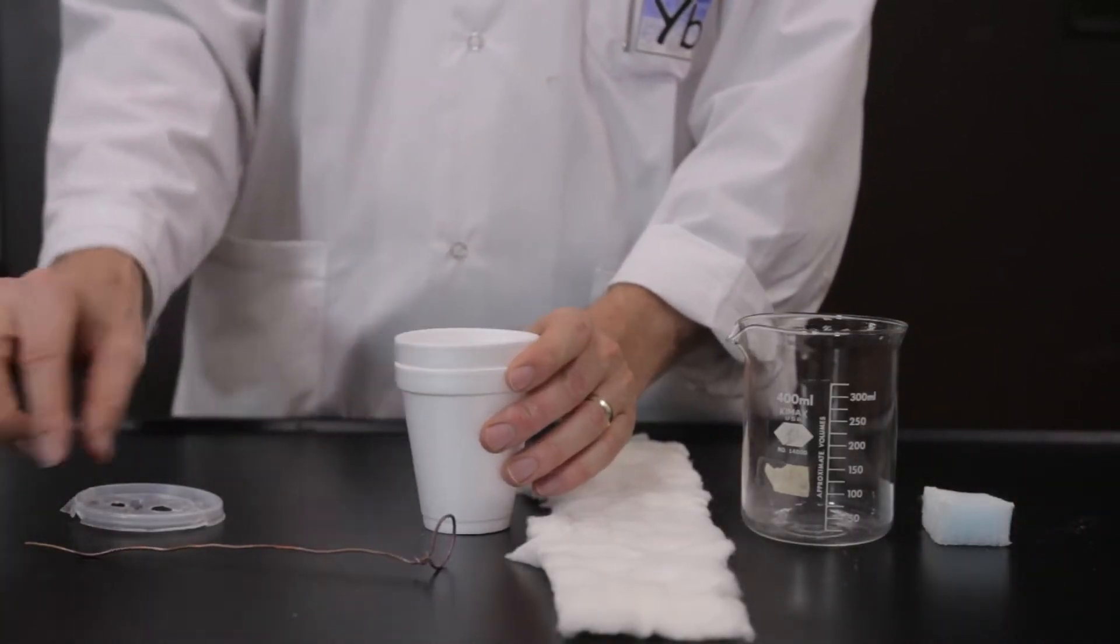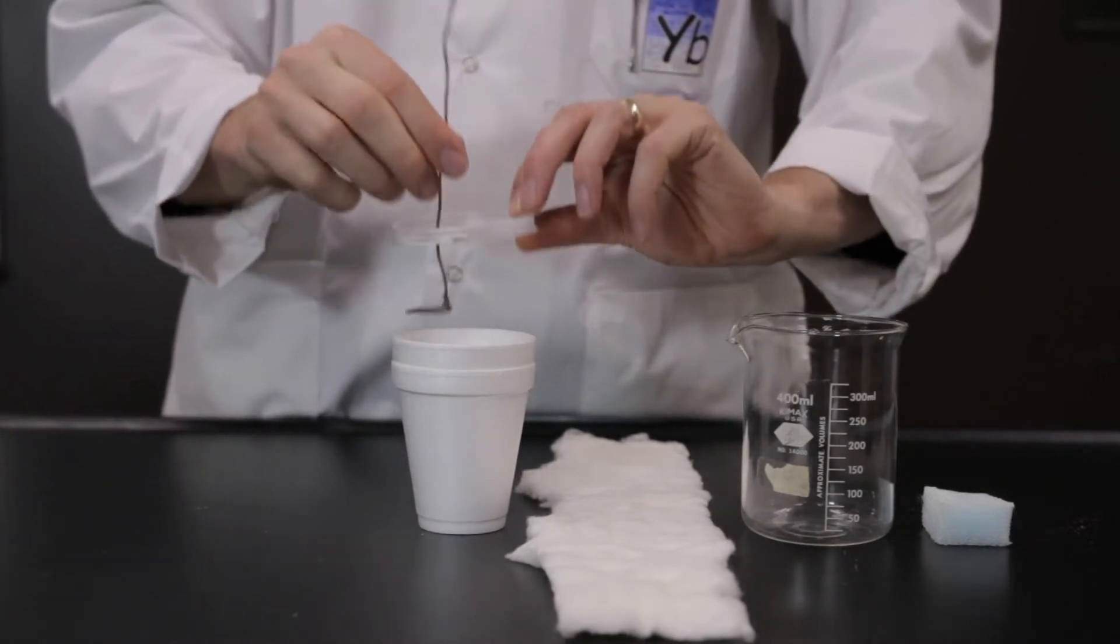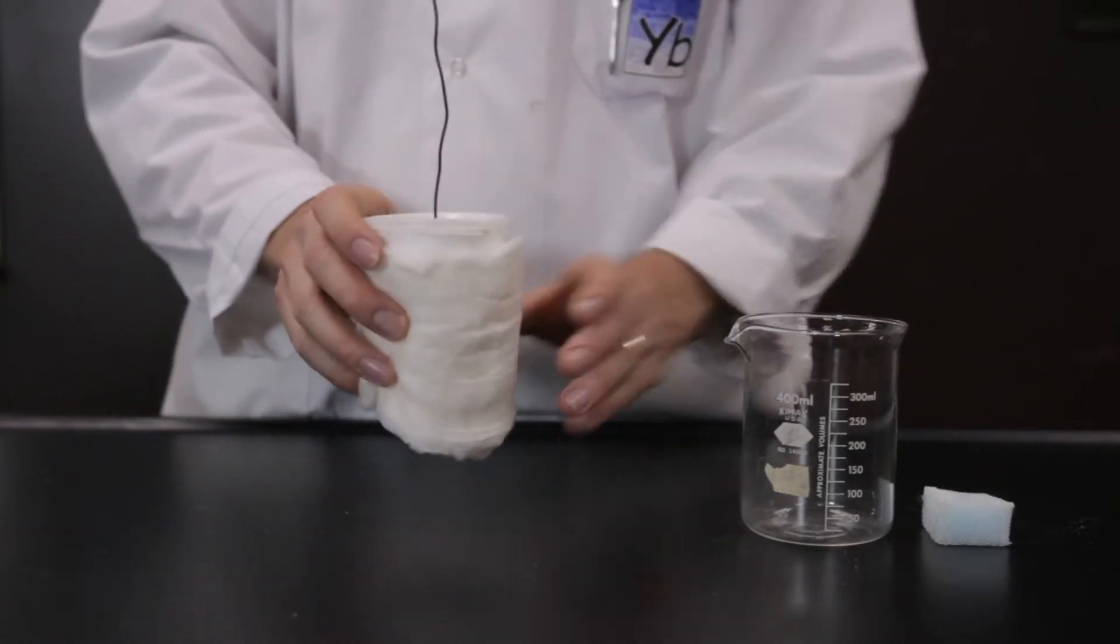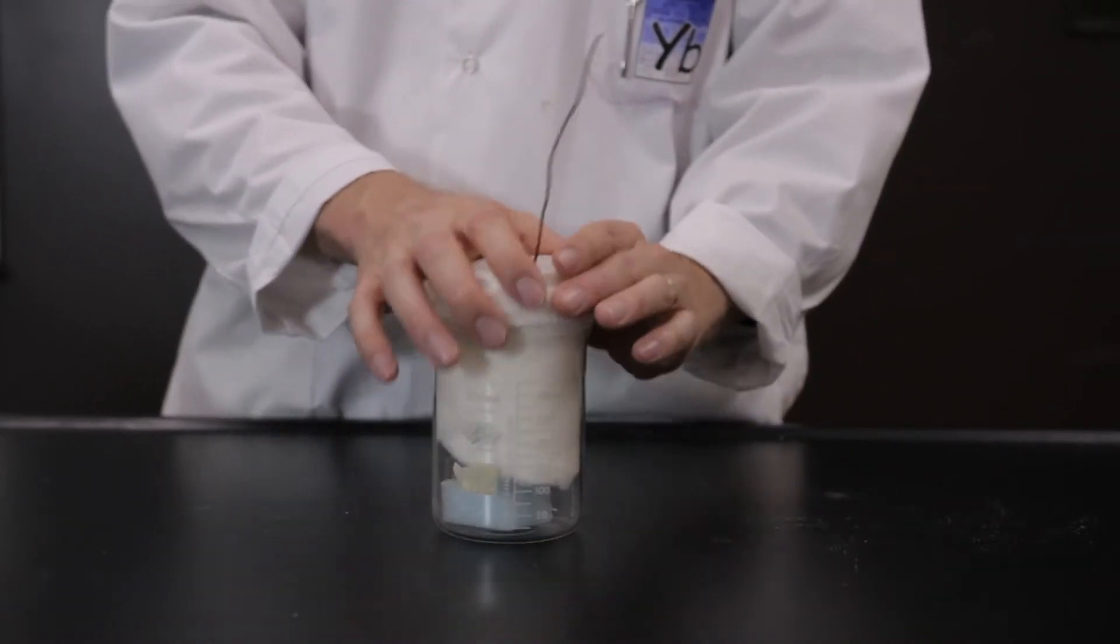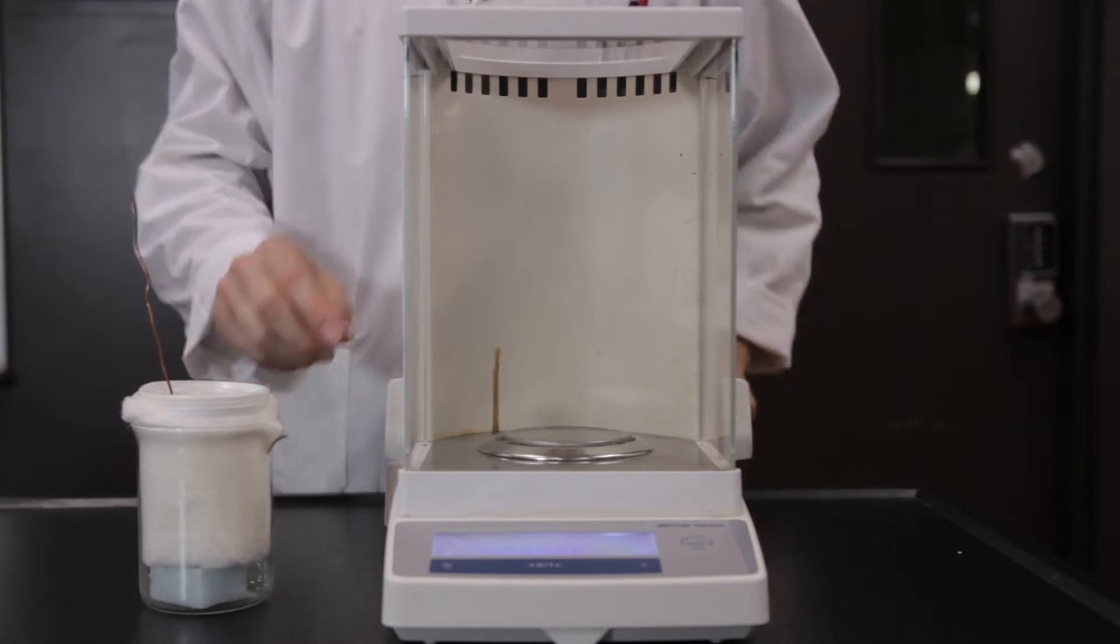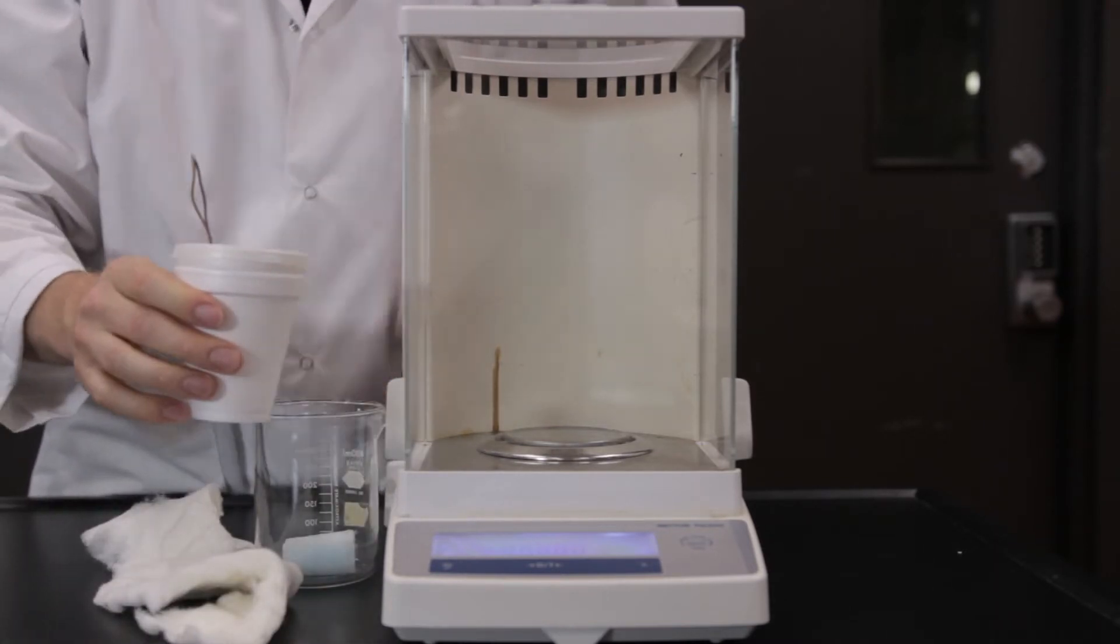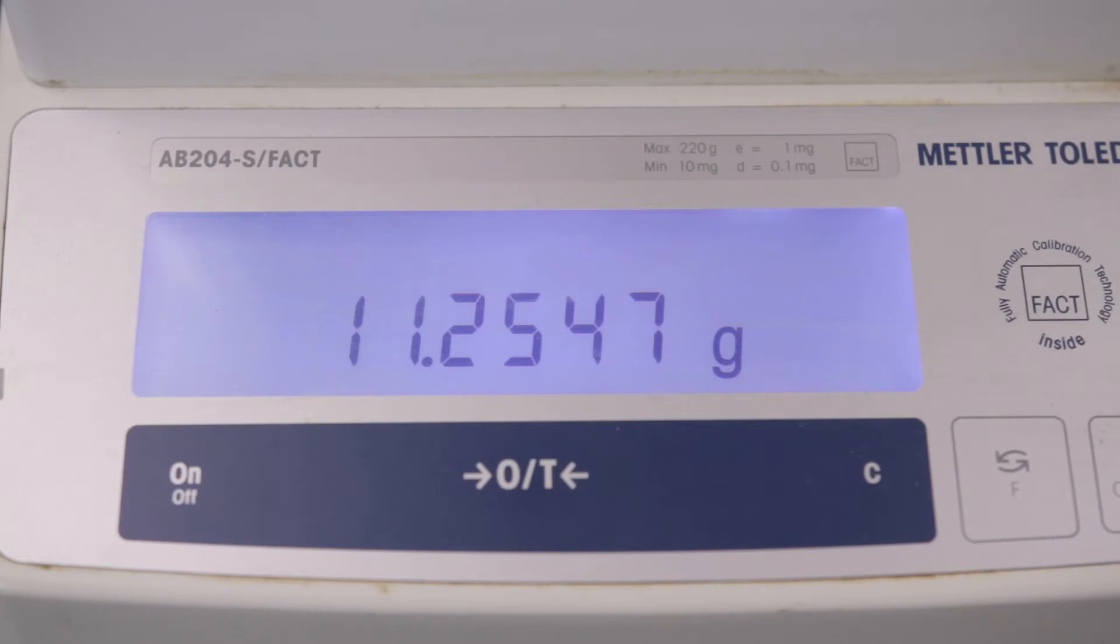Assemble the coffee cup calorimeter. Weigh the empty calorimeter, which is made up of two cups, a lid, and the stirrer on an analytical balance. You will have to bend the stirrer to fit the calorimeter in the balance. Make sure nothing touches the inside of the balance. Record the exact mass on the datasheet.